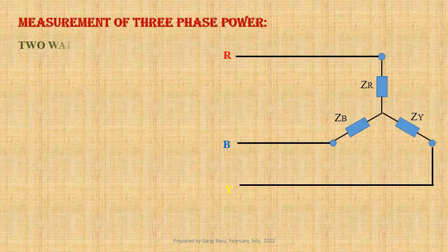The 2-wattmeter method is the most popular method of measuring active power of a 3-phase, 3-wire system where the load is balanced or unbalanced, star or delta connected.